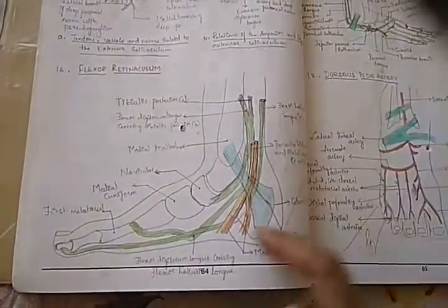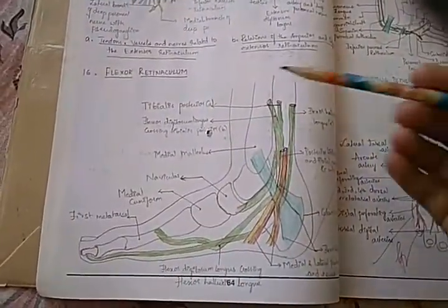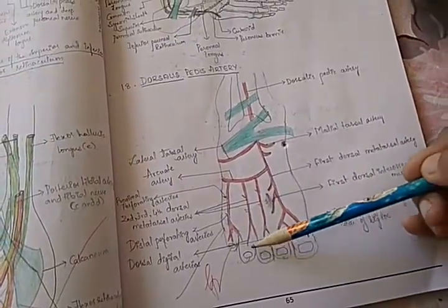Coming to lower limb, they have shown what? What do you think this is? This part of the body? I don't know. Leg. Yeah, leg. And what is this? The leg. Yeah, the toes.